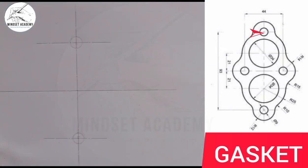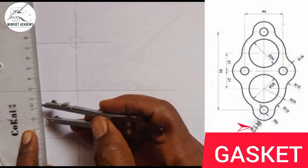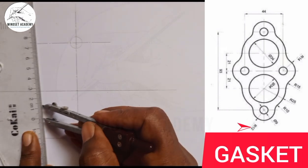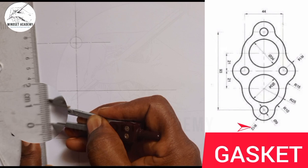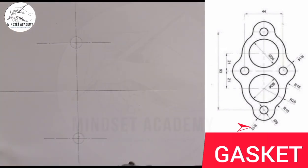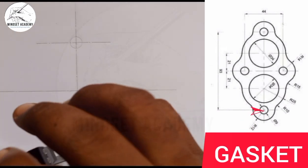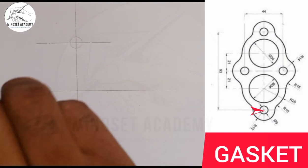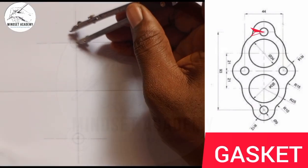The outer circle is given a radius of 12. I'm going to measure 12 — from zero, this is 10, 11, 12 here. I'll place it at the center and draw a circle using a faint line first.